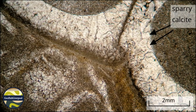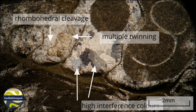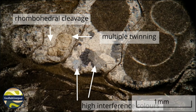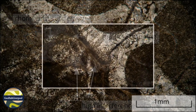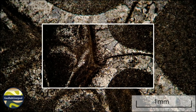Under cross polars, the calcite is identified by its very high, up to 7th order, interference colours, its rhombohedral cleavage and multiple twinning. The interference colours are delicate pastel shades of pink and brown. When in extinction, the calcite doesn't go completely black but it shows a fine speckling.